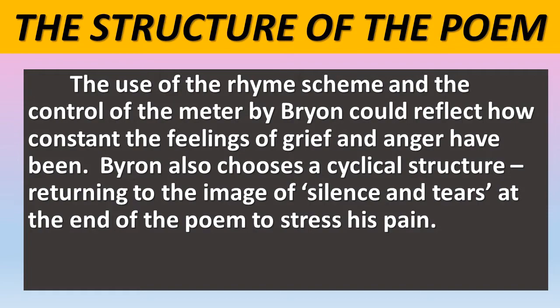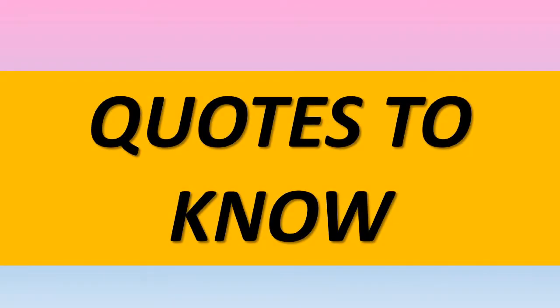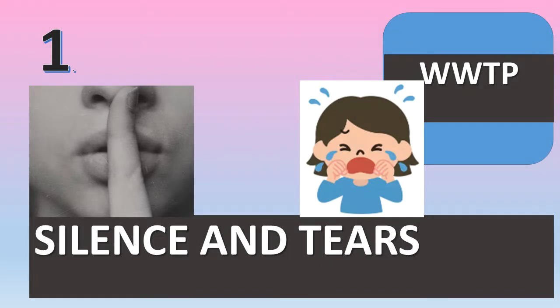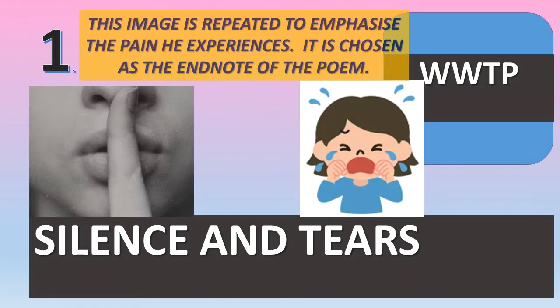Now let's move on to think about quotes to know for the exam. The first one is 'silence and tears.' This image is repeated to emphasise the pain he experiences. It's also chosen as the end note of the poem to really emphasise the idea that love can be responsible for pain and anguish.